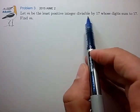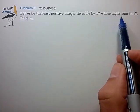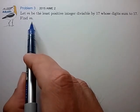Let m be the least positive integer divisible by 17 whose digits sum to 17. Find the number m.